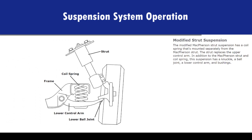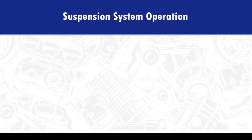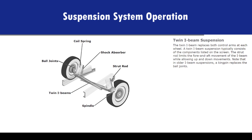The modified McPherson strut suspension has a coil spring that's mounted separately from the McPherson strut. The strut replaces the upper control arm. In addition to the McPherson strut and coil spring, this suspension has a knuckle, a ball joint, a lower control arm, and bushings. The twin I-beam replaces both control arms at each wheel. The strut rod limits the fore and aft movement of the I-beam while allowing up and down movements. Note that in older I-beam suspensions, a kingpin replaces the ball joints.